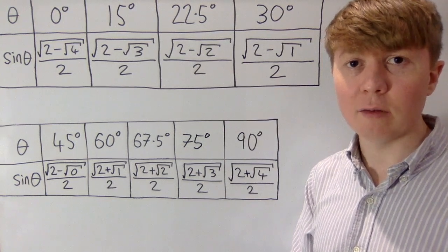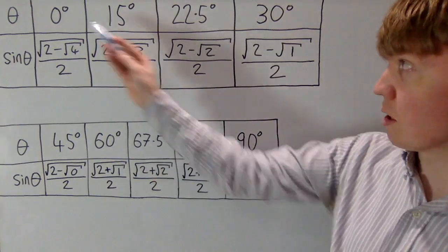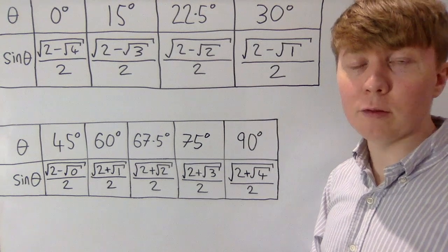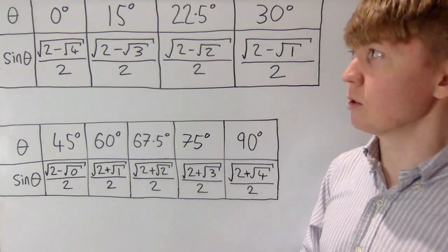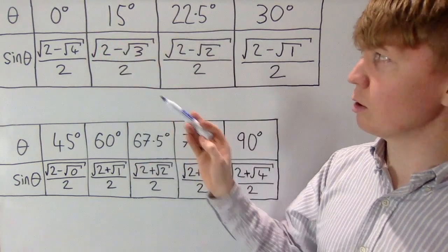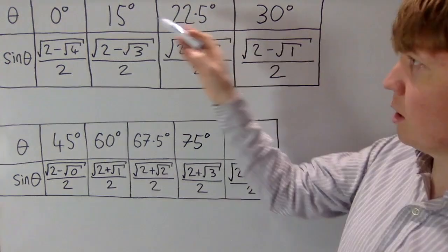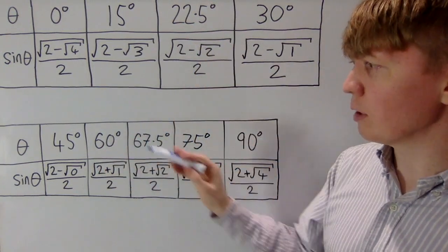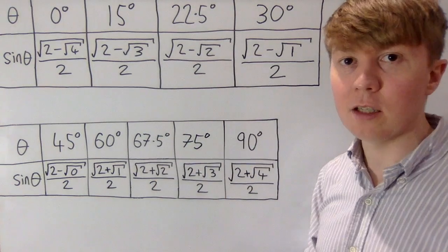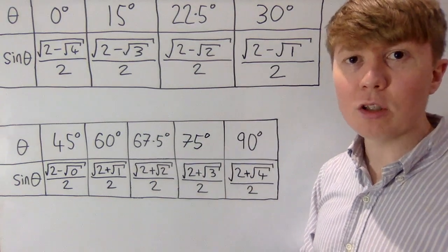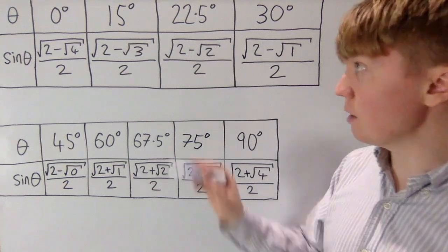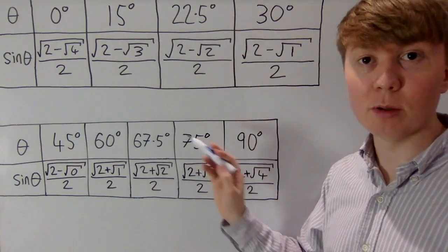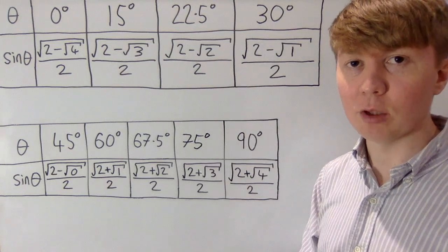This might seem like a strange collection of angles, but it's essentially just our classic 0, 30, 45, 60, and 90. Then we also add in half of each of these angles: half of 30 gives us 15, half of 45 gives us 22.5, and half of 60 and half of 90 are already included. Then we also add in our complementary angles, so 90 minus 15 gives us 75, and 90 minus 22.5 gives 67.5.